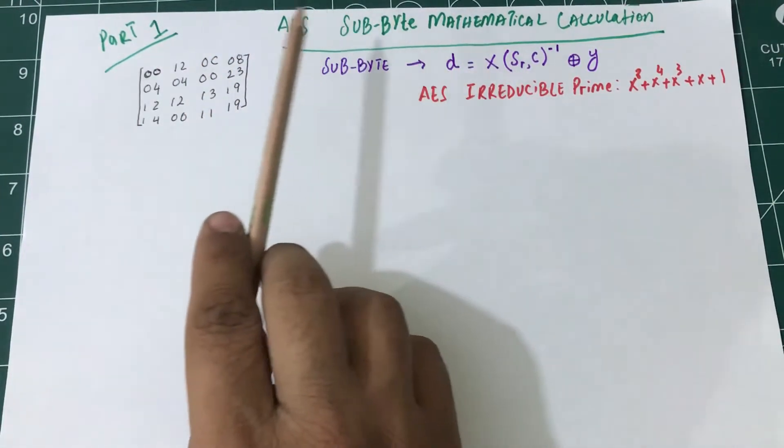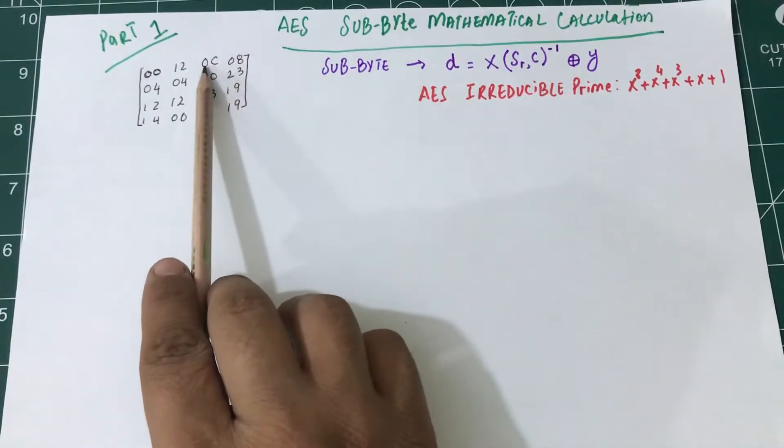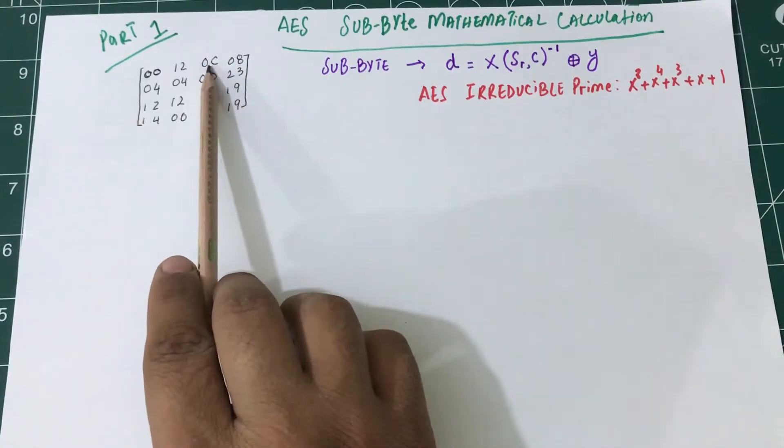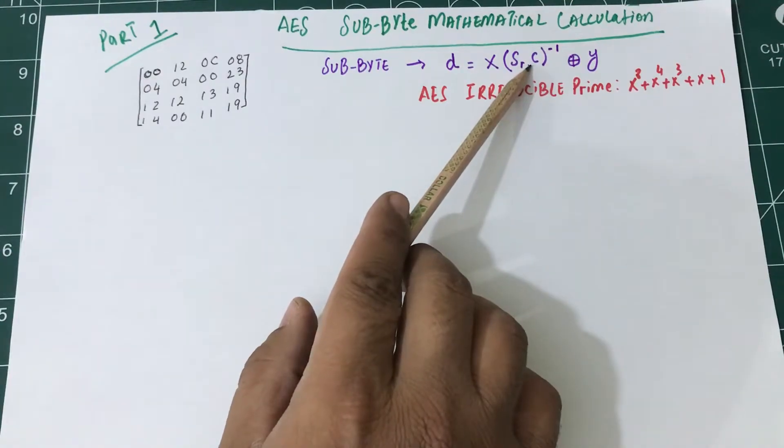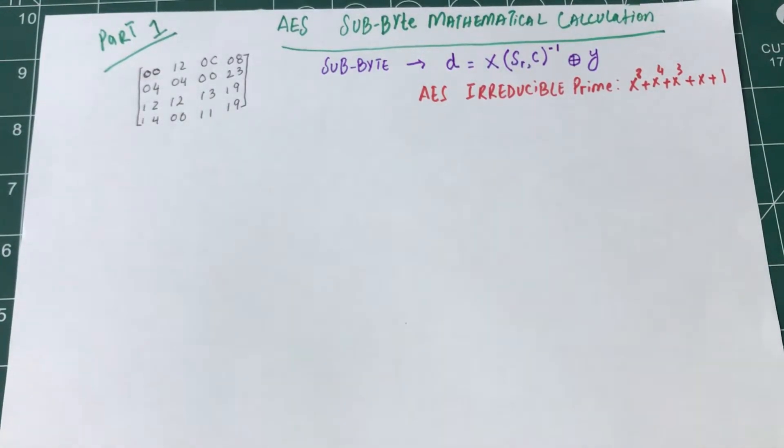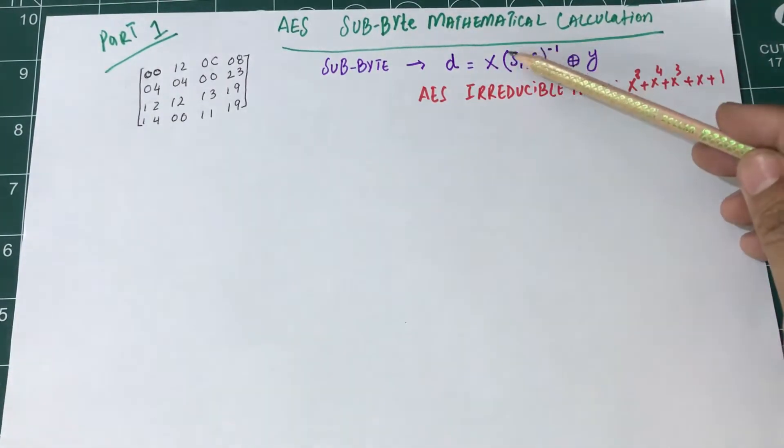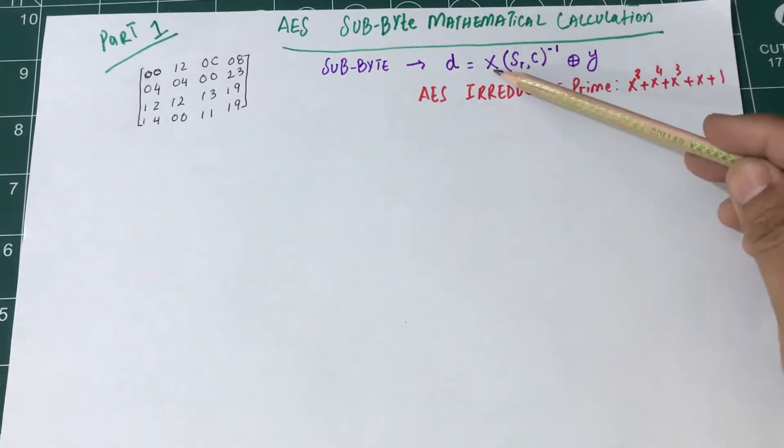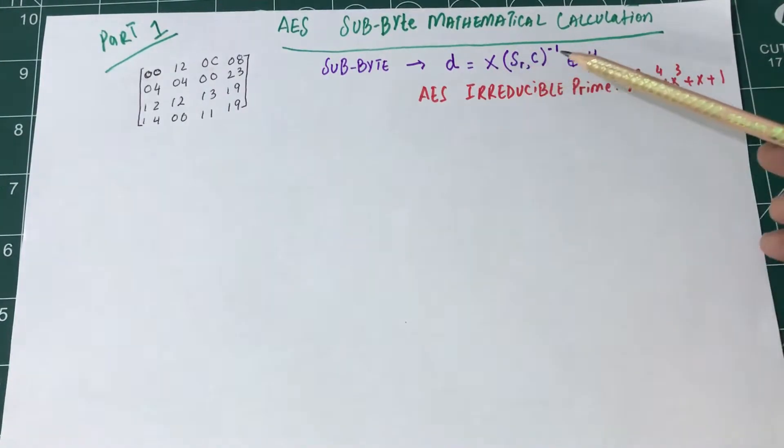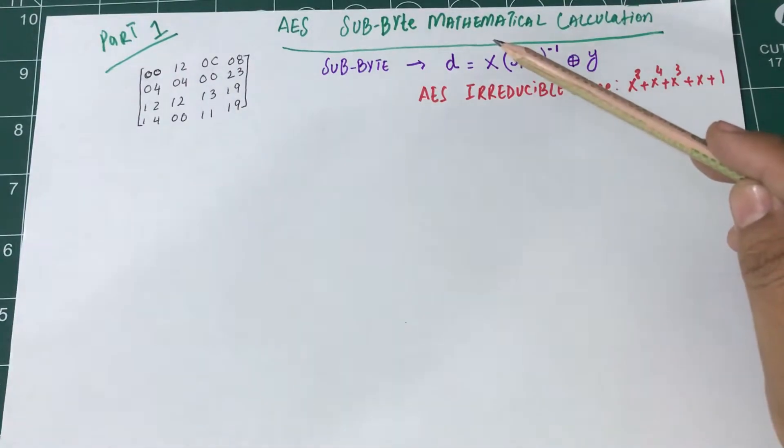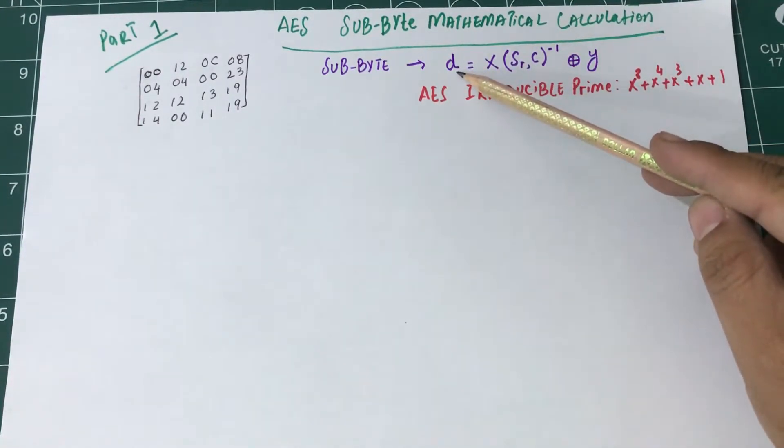The first thing I need to do is take the multiplicative inverse of 0C. After you take that multiplicative inverse, you need to multiply that value by something which we're calling x. Once I've multiplied this number, I'm going to take an XOR with some other value which is y.